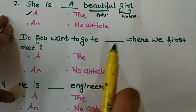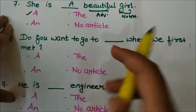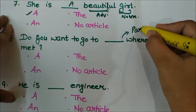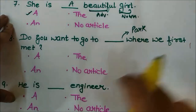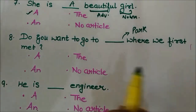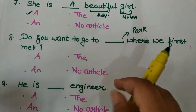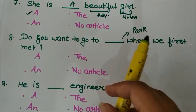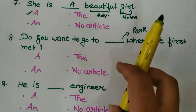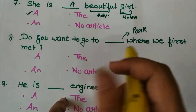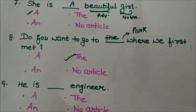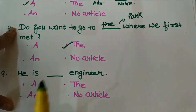Next question: 'Do you want to go to ___ park where we first met?' Here we are talking particularly about some park — we have already been there together. There can be many parks in a locality, but I am talking about that particular one we have already visited. So the answer is 'the': 'Do you want to go to the park where we first met?'